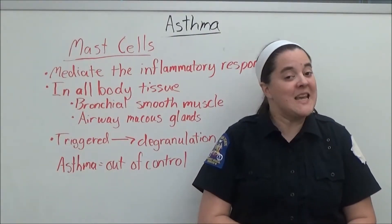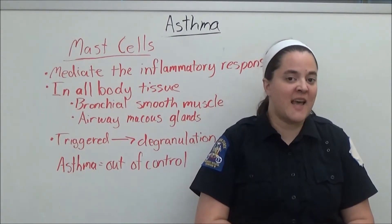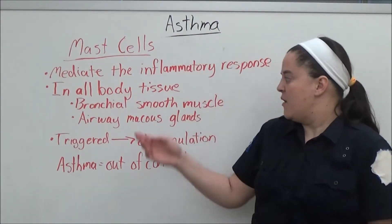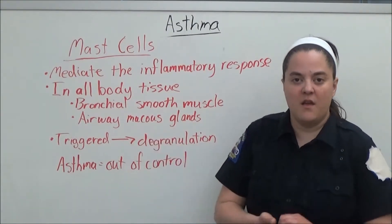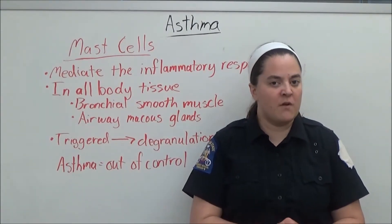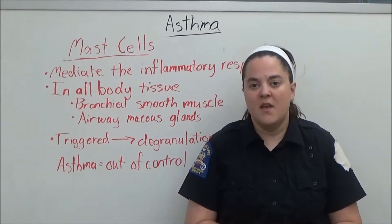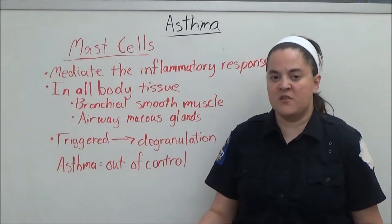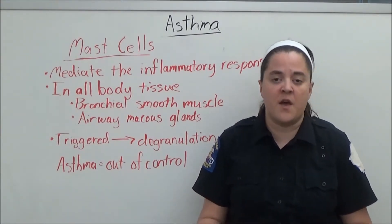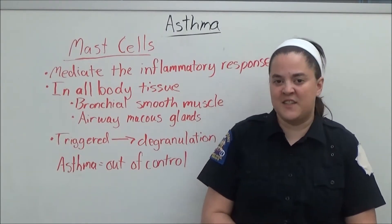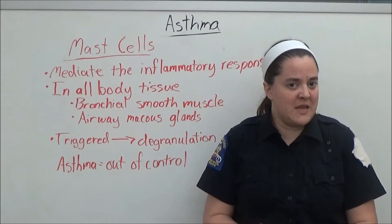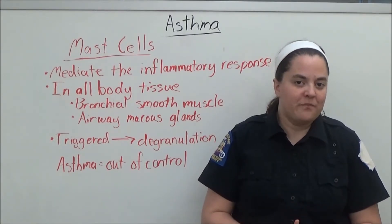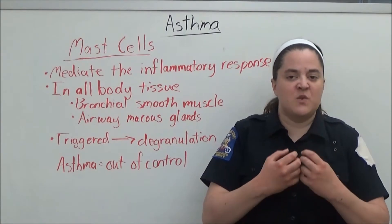Mast cells mediate the inflammatory response. According to ScienceDirect.com, mast cells are located in all body tissues, including bronchial smooth muscle and airway mucous glands. Mast cells contain a number of different chemical mediators, including histamine. When the cell is triggered, it degranulates and releases all of those chemical mediators into the surrounding tissue, which causes inflammation to the affected area. This is a normal response that occurs in instances such as when you're stung by a bee or bitten by a bug and there's localized swelling. However, in asthma, this reaction occurs in the airway and the swelling is out of control.